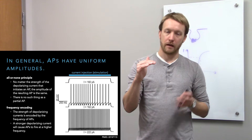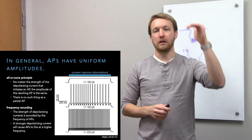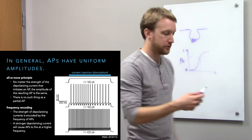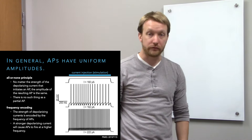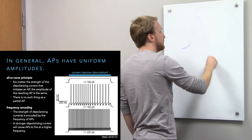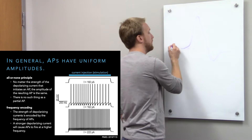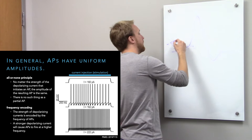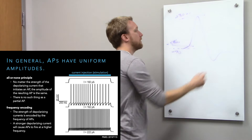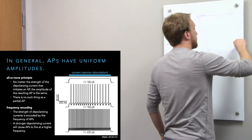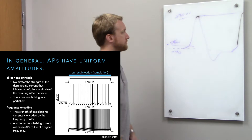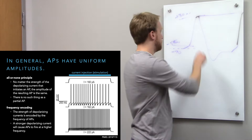Because of this, we have the all-or-none principle: you either fire an action potential or you don't. Once you hit threshold, that drives further depolarization to a relatively uniform peak amplitude. The amplitude has nothing to do with the stimulus being encoded — stimulus intensity is encoded by frequency, not amplitude. So if this is rest at minus 70, threshold around minus 55, and the peak at positive 30, a second action potential would reach the same amplitude as the original.